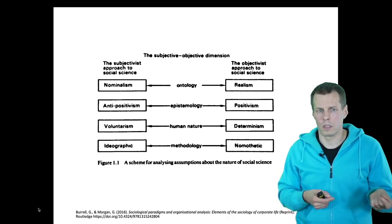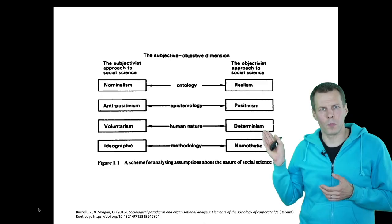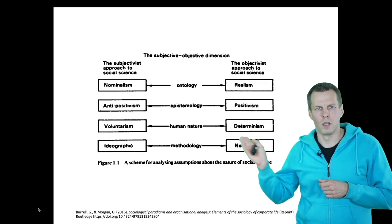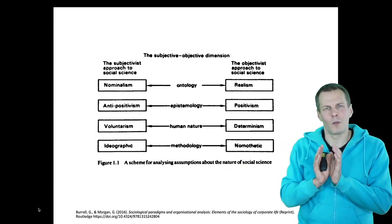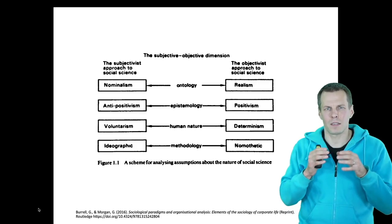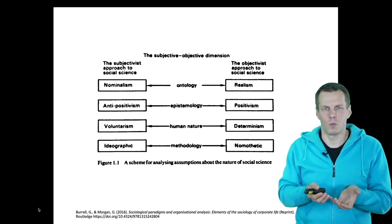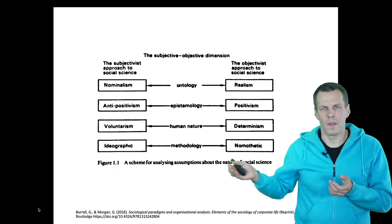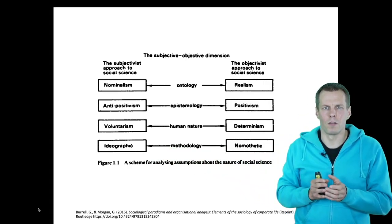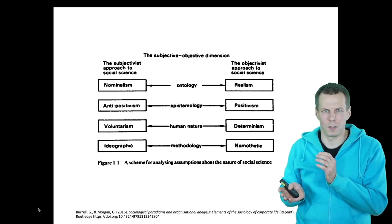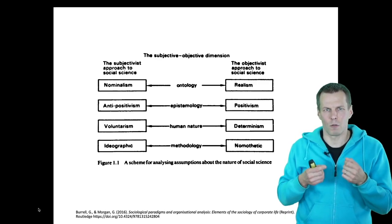With anti-positivism, we say that we cannot understand the social world simply by observing — we have to get into the heads of the people and study their experience in the situation. On the objective side, free will doesn't play a large role; on the subjective side, free will is essential. For methodology, nomothetic refers to a certain set of methods — like a recipe book — telling you the best method for your situation. Ideographic methods means you tailor your method to the situation, and there is no single correct method; it is highly subjective, specific to the researcher and subject.